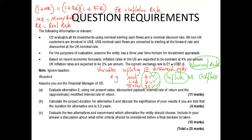Now let us go to our question. CD evaluates all its investments using nominal sterling cash flows and a nominal discount rate. So the company policy has been given. As far as inflation is concerned, what should we do according to this policy? We need to inflate all the cash flows. All non-UK customers are invoiced in USD. USD nominal cash flows are converted to sterling at the forward rate and discounted at the UK nominal rate. The exchange rate is the major item for discussion tonight.